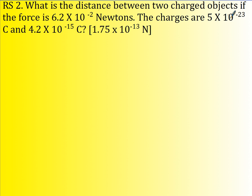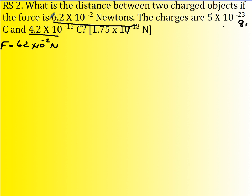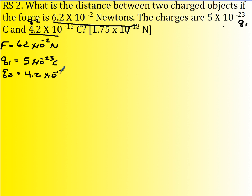Now what's the distance between two charged objects if the force is 6.2 times 10 to the negative 2 Newtons? F is 6.2 times 10 to the negative 2 Newtons. The charges are q1 = 5 times 10 to the negative 23 Coulombs, and q2 = 4.2 times 10 to the negative 15 Coulombs. I'm looking for the distance. I know F equals k q1 q2 over r squared — we're using d here.